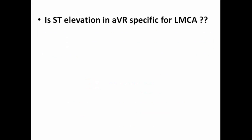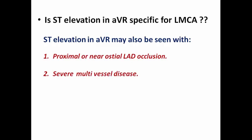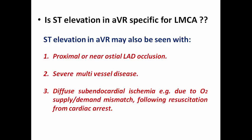Is ST elevation in AVR specific for left main coronary artery? Whenever we find ST elevation in AVR, does this surely mean left main coronary artery affection? The answer is not always. ST elevation in AVR may also be seen with proximal or near-ostial LAD occlusion without affection of the LCX or left main. Severe multi-vessel disease is another reason, and in some pictures it may be a chronic pathology seen in all serial ECGs. Diffuse subendocardial ischemia — such as in oxygen supply-demand mismatch following resuscitation from cardiac arrest or hypovolemic shock — may also show this pattern.